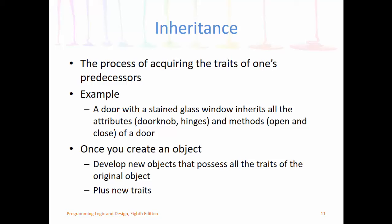And then all we have to do is add a new attribute called stained glass window. Once you create an object, the new objects possess all the traits of the original object plus new traits. That's the essence of inheritance.